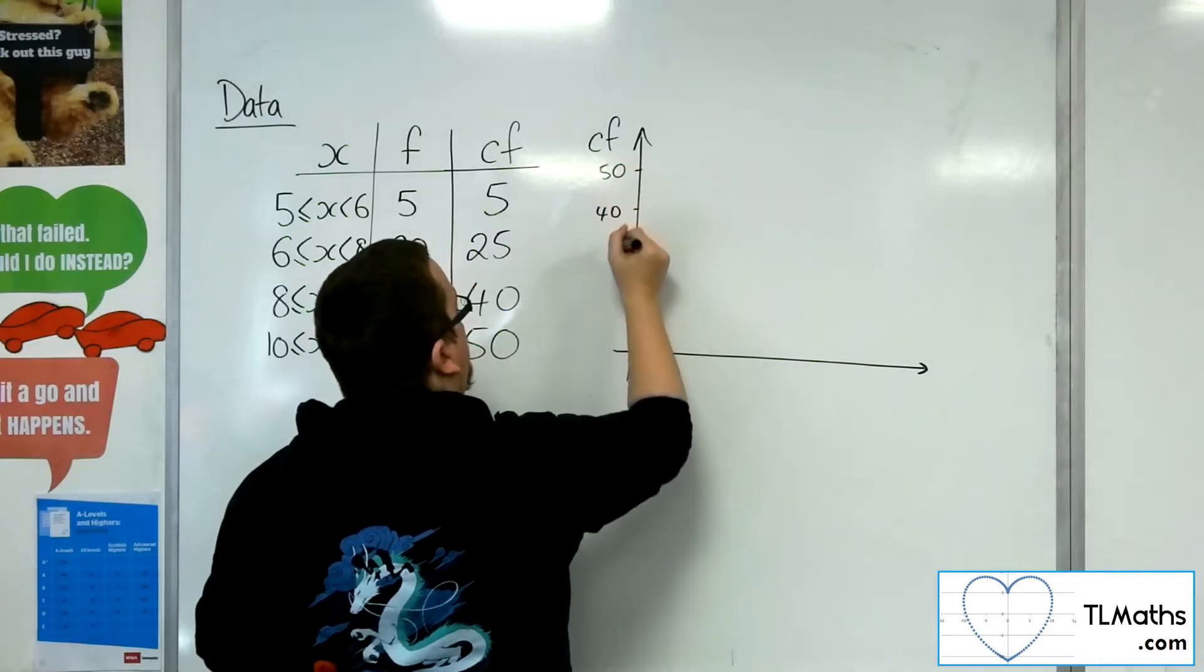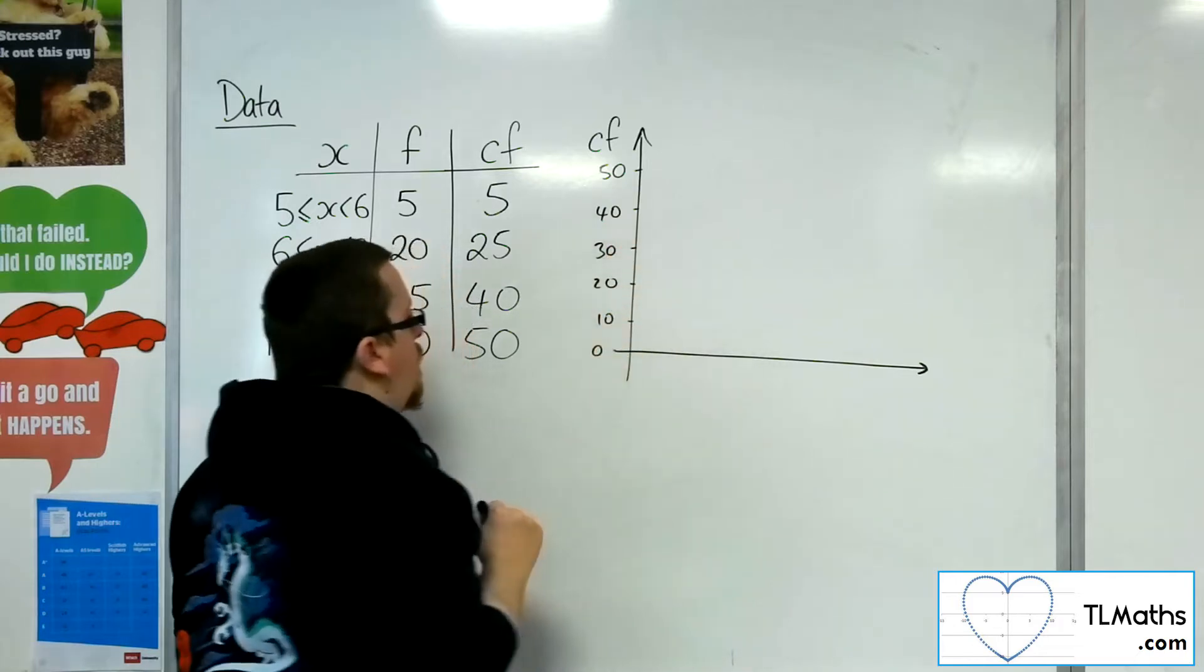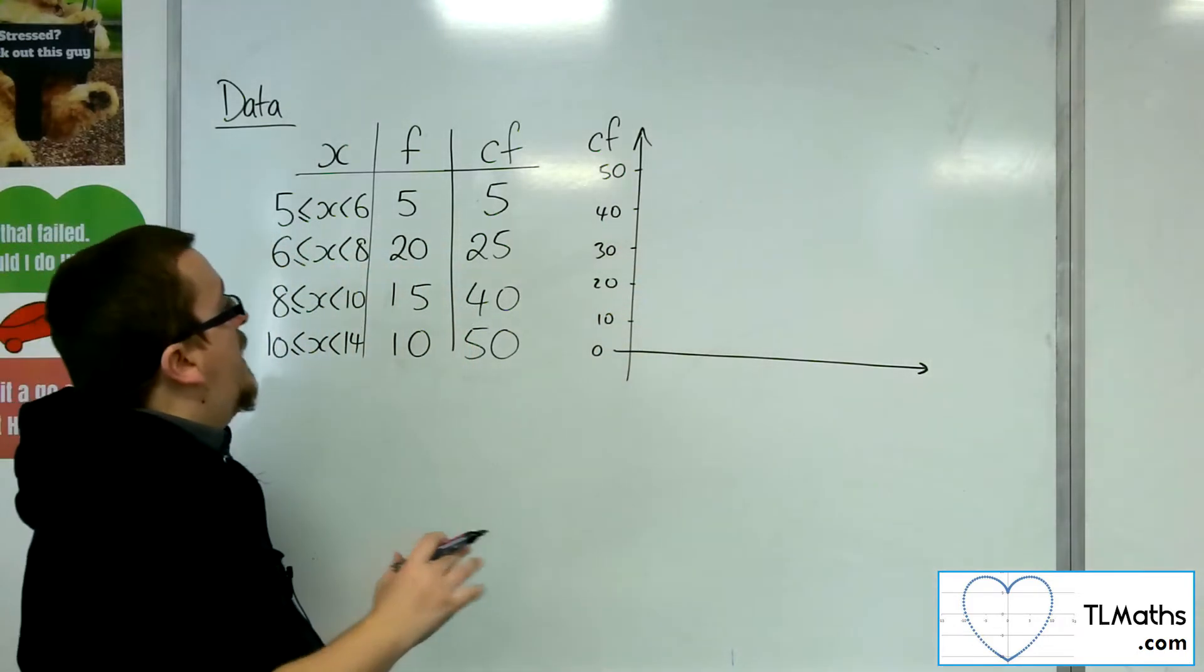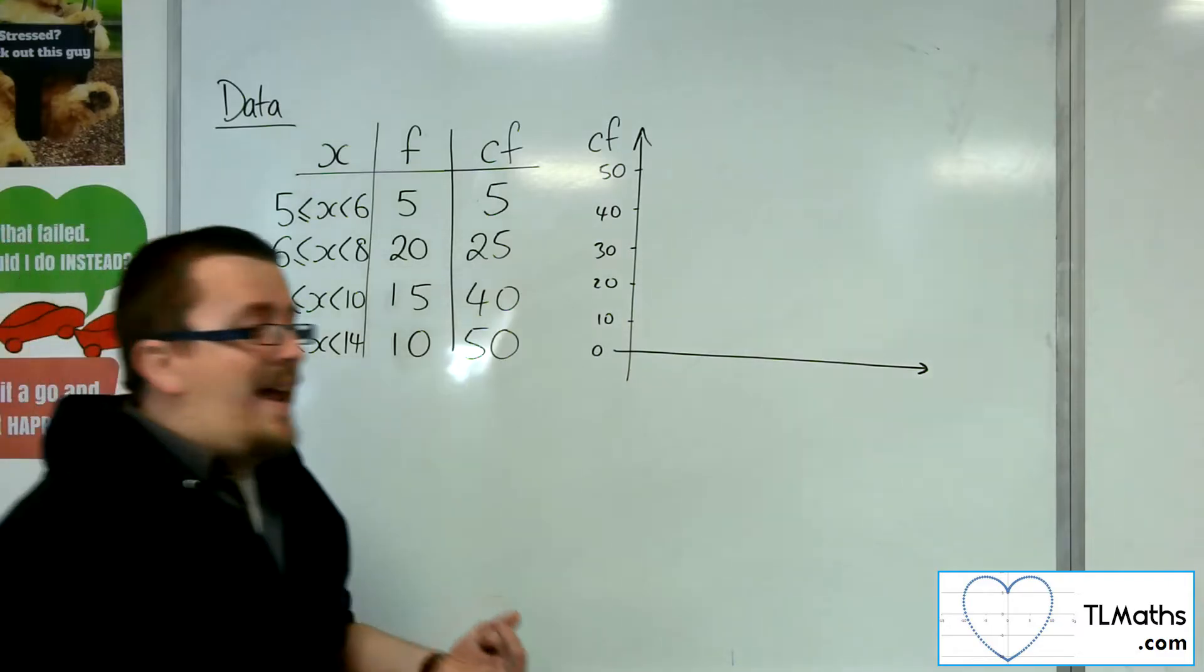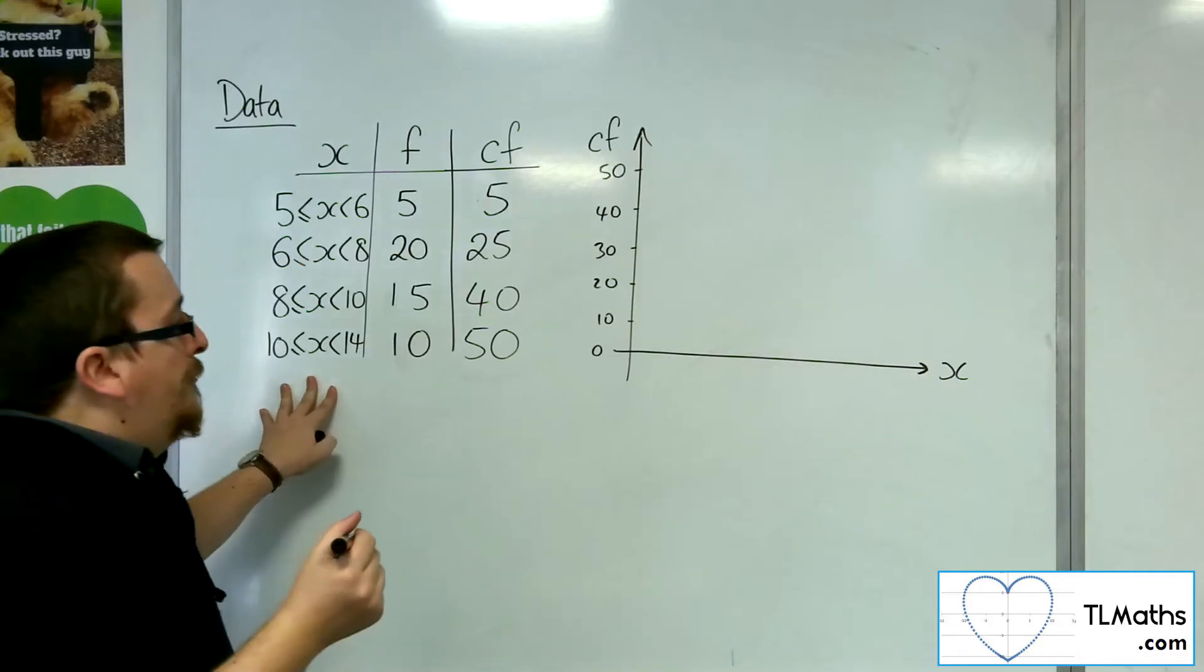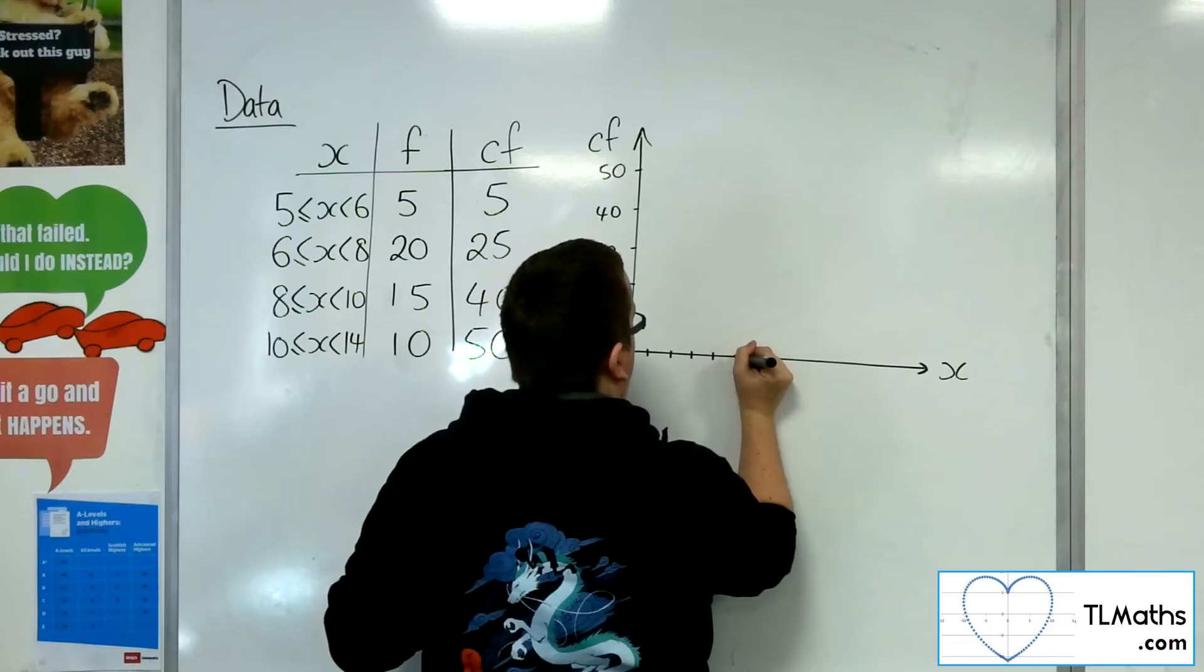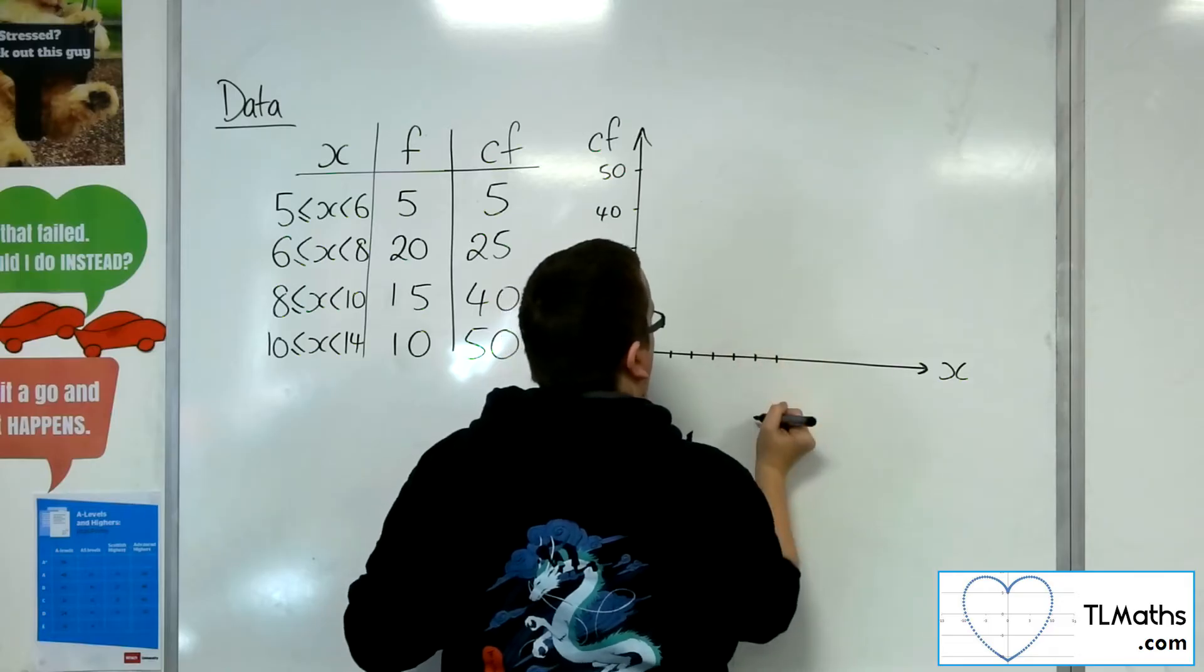And then along the bottom we've got our x values. Okay, now they're going up to 14, so we're going to have 2, 4, 6, 8, 10, 12, 14.